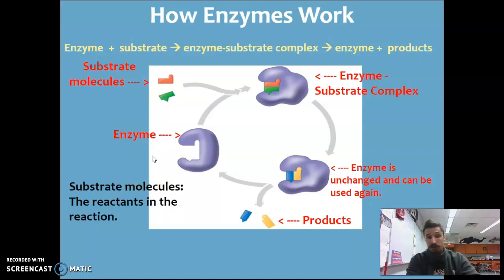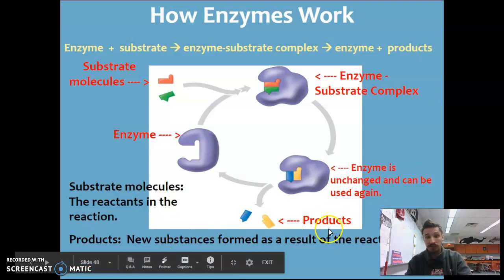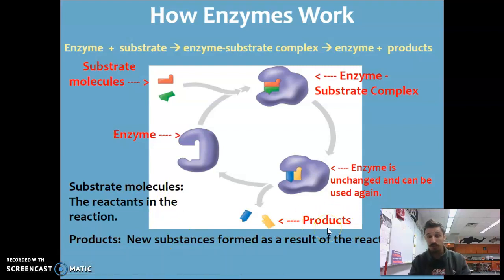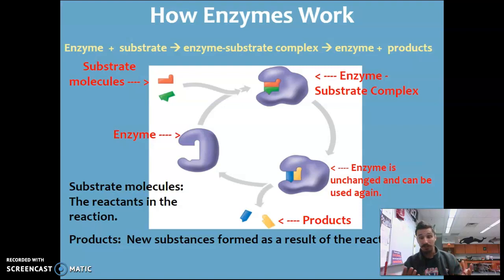Substrate molecules are the reactants in the chemical reaction — the beginning material needed for the chemical reaction. Products are the new substances formed by the chemical reaction. That chemical reaction was already going to happen in the first place, but the enzyme lowers the activation energy needed. Therefore, the chemical reaction can happen faster.